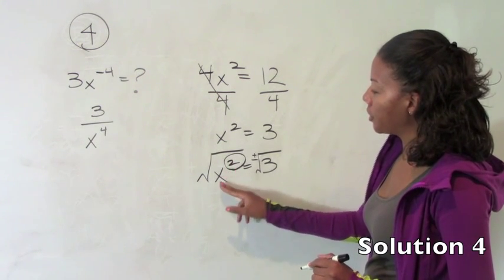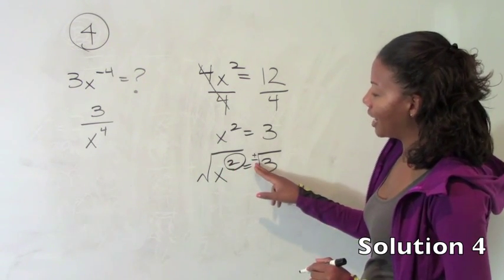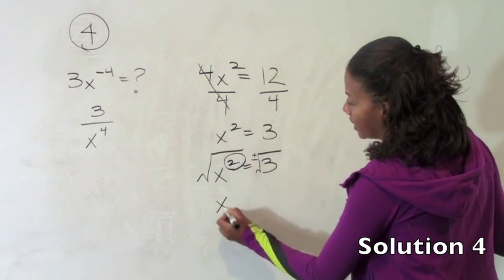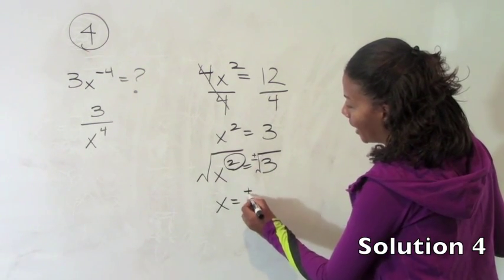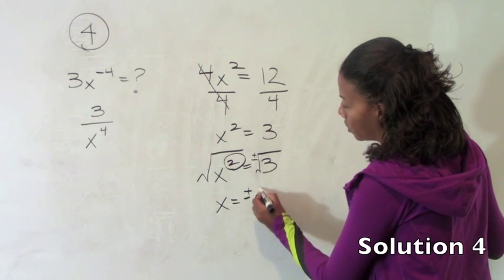Once you square it, it's going to be positive. So squaring a number masks the underlying sign. So x in this case is either positive the square root of 3 or negative the square root of 3.